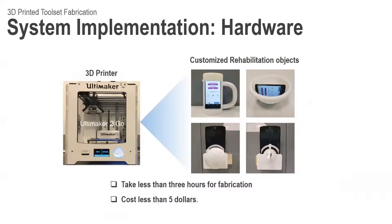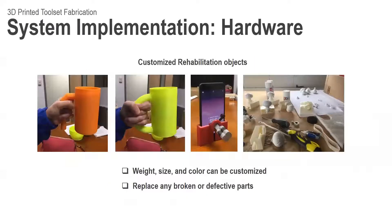Second is the hardware part. The rehabilitation objects produced by commercial 3D printers take less than 3 hours for fabrication and cost less than $5. Moreover, these objects can be customized based on the rehabilitation goals, hand size, foam size, and user preference.